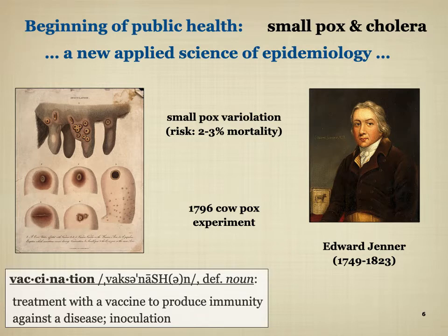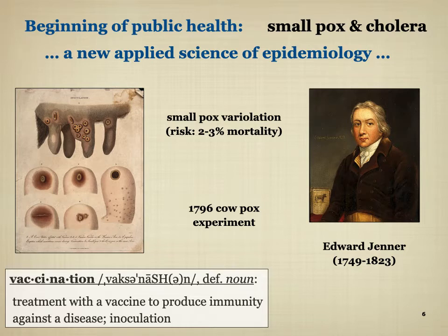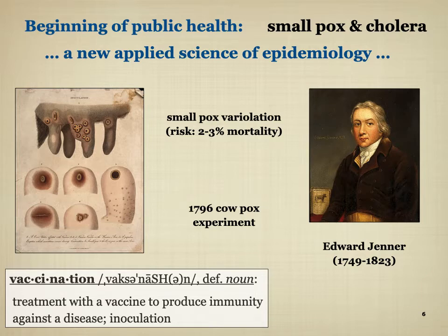Just as with variolation, Jenner took pustules from cowpox and ran a famous experiment in May 1796. He vaccinated the eight-year-old son of his gardener, James Phipps, with material from a milkmaid who had had cowpox. Then — the ethically controversial part — he deliberately infected the eight-year-old with smallpox to see if he would develop the disease. This is why today vaccines take so long: it's not enough to produce a vaccine, you need to run at least a year-long trial to see if it works. Edward Jenner only waited a few weeks. Miraculously, the eight-year-old did not get smallpox.